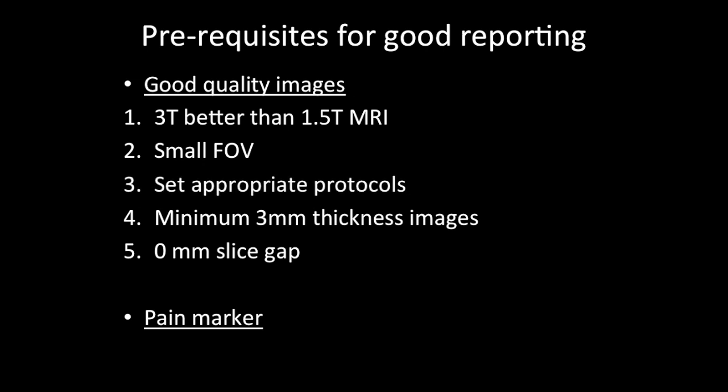Call in the application specialist and set appropriate protocols for the scan. Get at least 3mm thickness images because with thicker sections the resolution is less, especially when you have to image small and thin ligaments like in the ankle. Obtain the images with 0mm slice gap. Always make it a point to put a pain marker at the site of pain or swelling in the patient, as this will give you an idea as to which pathology is causing the symptoms.